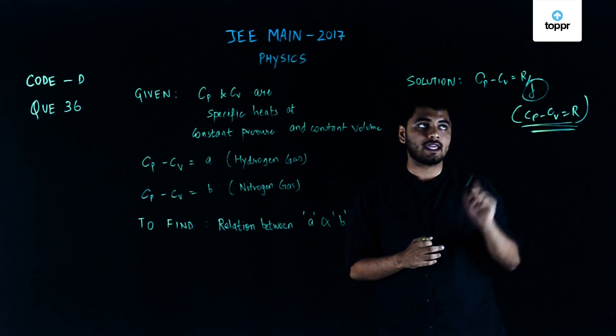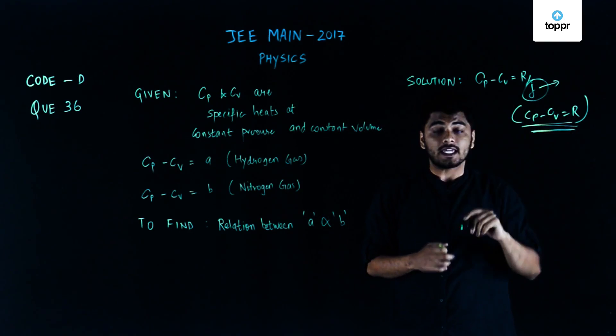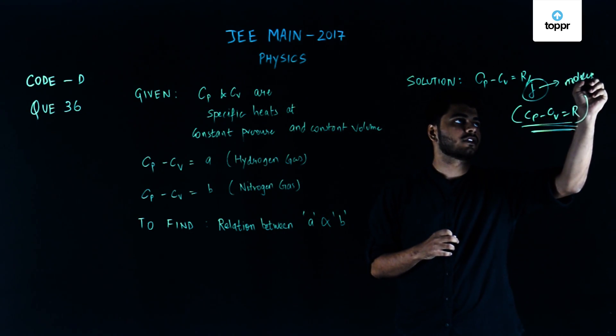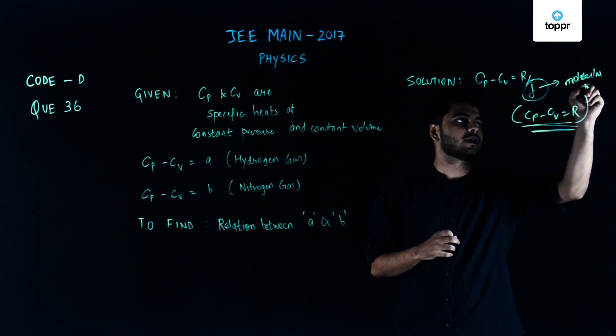Cp minus Cv equals R by J where J represents the molar mass or the molecular mass. So here it would be molecular mass.